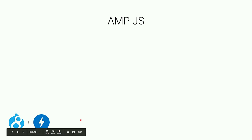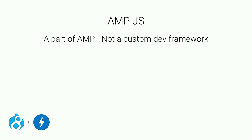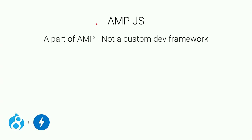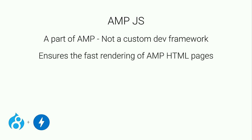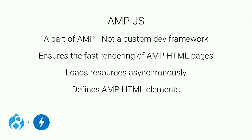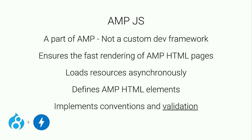AMP JS — I want to make it very clear: it's a part of AMP, it's not a custom dev framework. It's not like React or Angular or jQuery or something like that. It comes back to this include right here. What happens is you bring it in and it ensures that you get the fast rendering of AMP HTML pages. It does that by loading all resources on the page asynchronously based on the tags and the sources of the various tags you've got. It also carries the definitions of all those custom elements — AMP image, AMP Twitter, stuff like that. It knows how to interpret and render those and make it all wired together, and it all runs just by virtue of being included in the page.